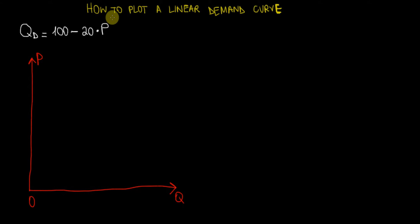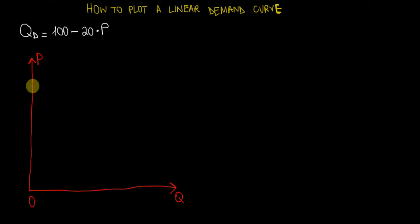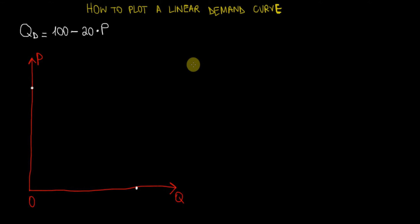In this video I would like to show how we can plot a linear demand curve. There are two points that we need in order to compute a line — two intercepts: a point that intersects the price axis and a point that intersects the quantity axis. So we are looking for these two points.